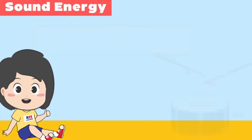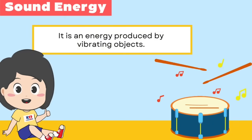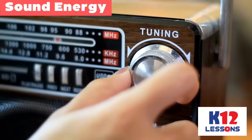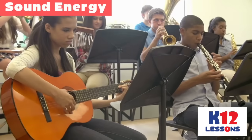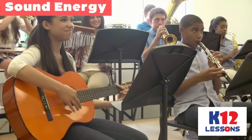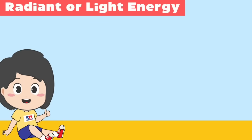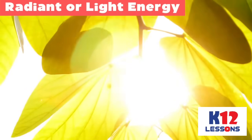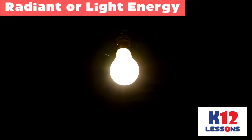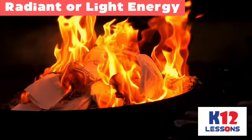Sound energy is energy produced by vibrating objects. Examples: radio, television, cell phones, and musical instruments. Radiant or light energy is a form of electromagnetic radiation produced by hot objects that can be seen by the human eye. It travels through a medium or empty space. Examples: the sun, lighted bulb, candle, laser, fire, and flashlight.